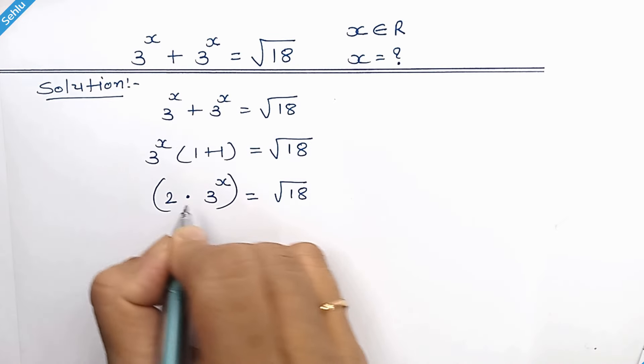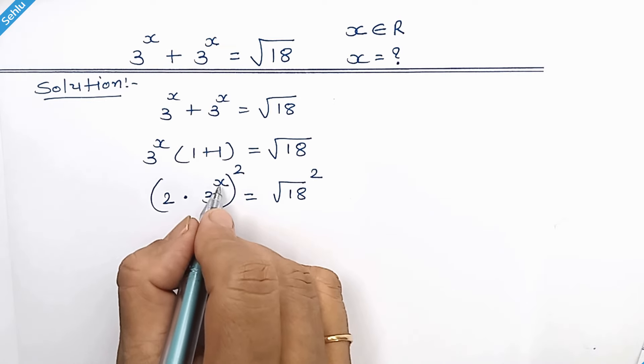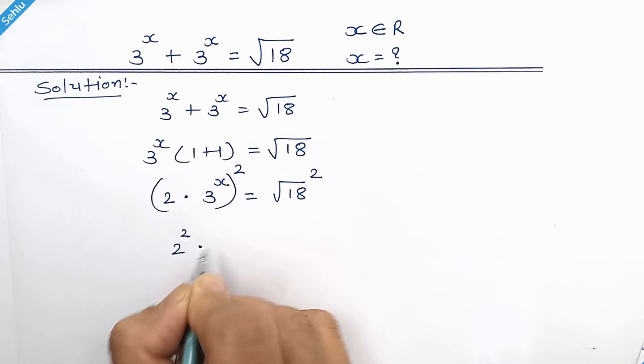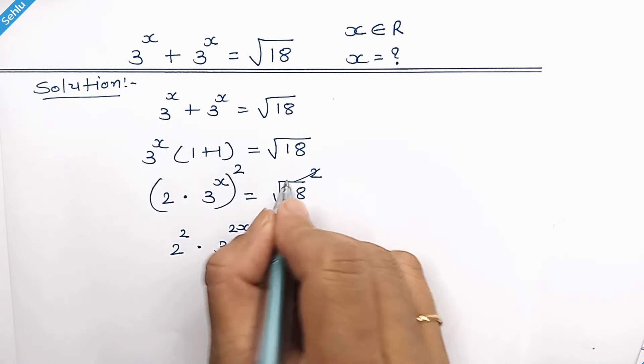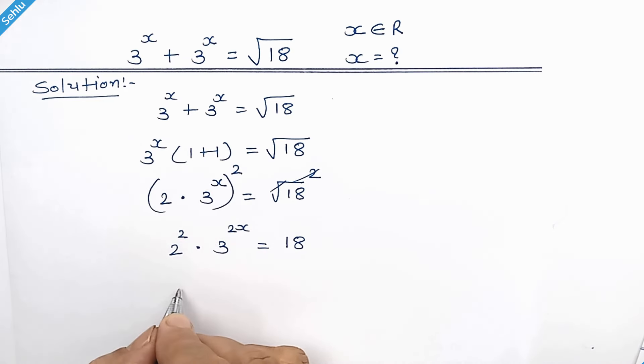Now squaring both sides: the square will multiply with x, so it will be 2 squared times 3 to the power 2x. The square root squared gives 18, and 2 squared is 4.